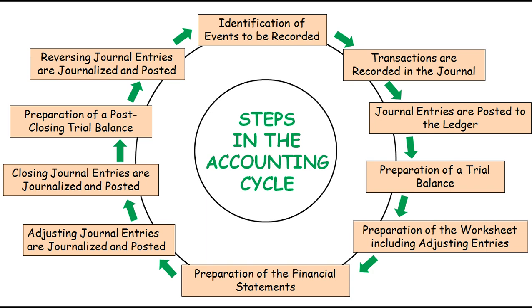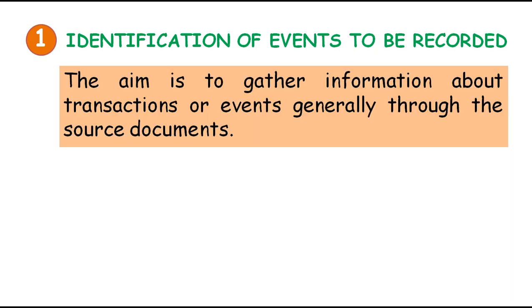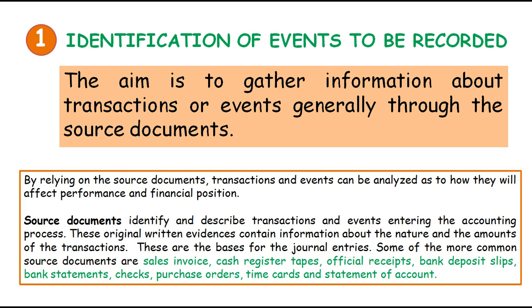Let us discuss these 10 steps one by one. Step one: identification of events to be recorded. The aim is to gather information about transactions or events generally through source documents. By relying on source documents, transactions and events can be analyzed as to how they will affect performance and financial position. Source documents identify and describe transactions and events entering the accounting process. These original written evidences contain information about the nature and amounts of transactions and are the basis for journal entries. Common source documents include sales invoices, cash register tapes, official receipts, bank deposit slips, bank statements, checks, purchase orders, time cards, and statement of account.